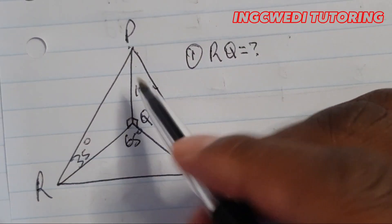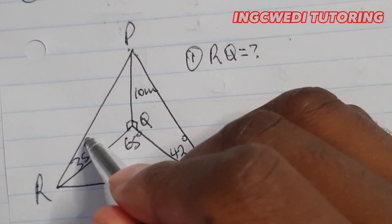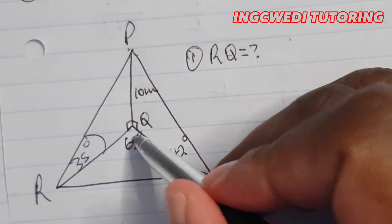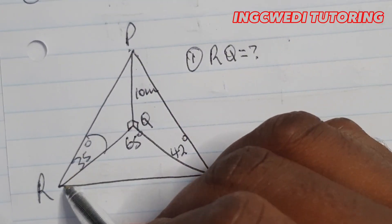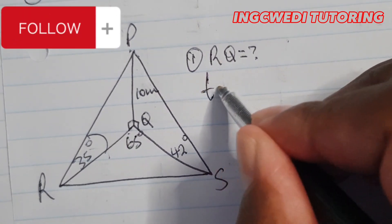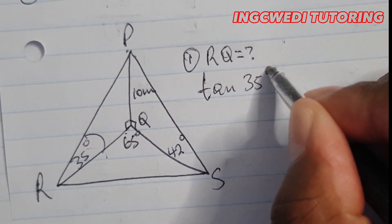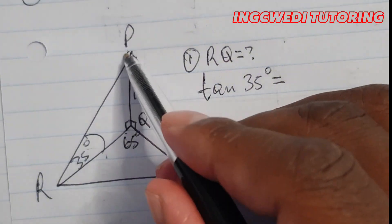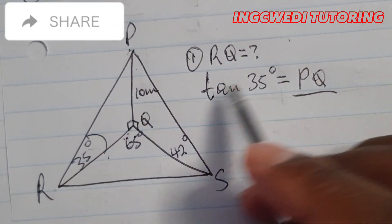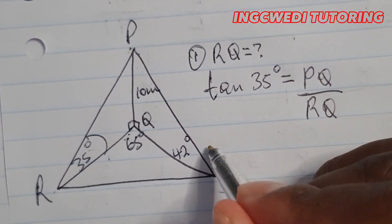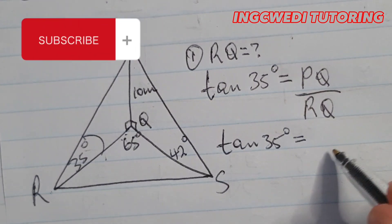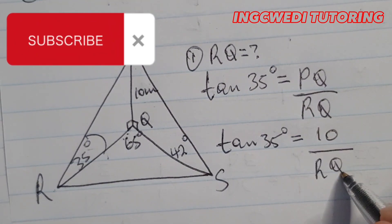We want RQ. We are given 35 degrees and the side PQ opposite. So we want the side adjacent, so we'll use tan. Tan 35 degrees equals opposite PQ over adjacent RQ. Now we substitute — the PQ we have is 10 over RQ.